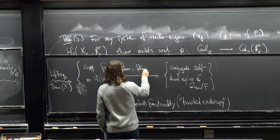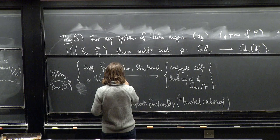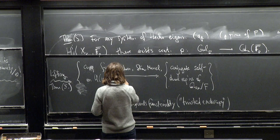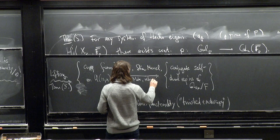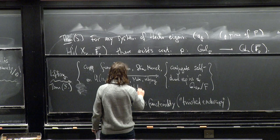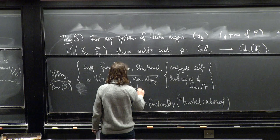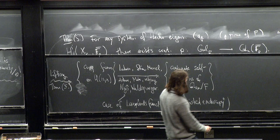So I guess Labesse proved some results here. And then the result I need was proved by Shin. They were related to the results of Sophie Morel. Then Arthur proved, Arthur in his book, proved this for symplectic and orthogonal groups. And Mok did the same for unitary groups. But all of this relies critically on the fundamental lemma of Ngô. And for these later works, on the stabilization of the twisted trace formula and many other works. So that's a huge body of work.